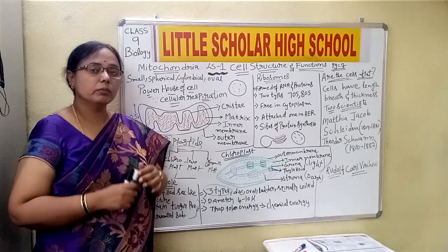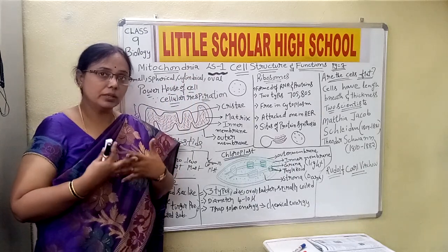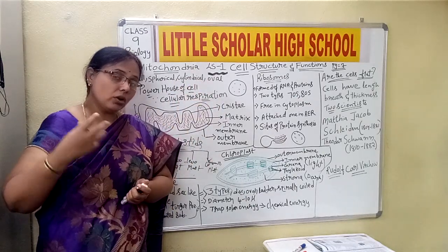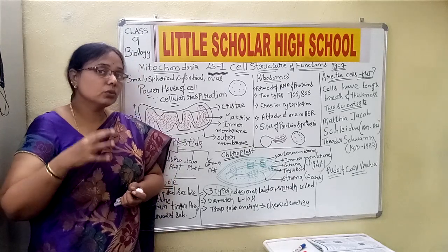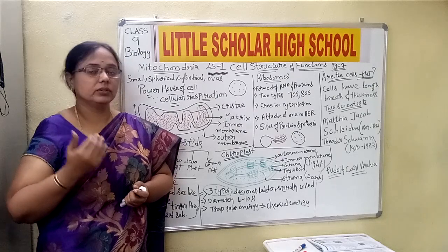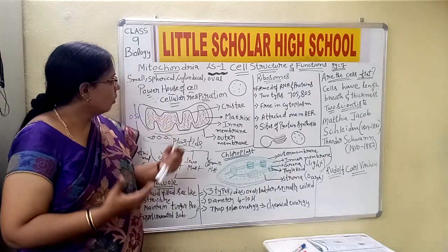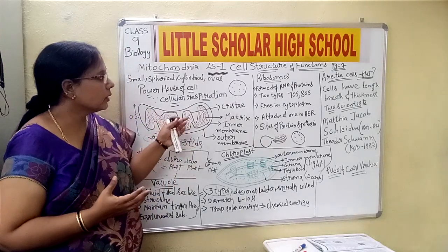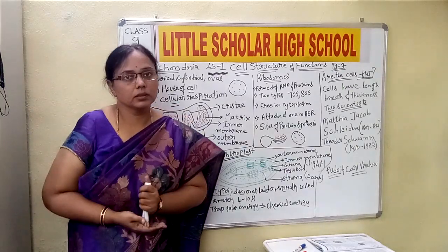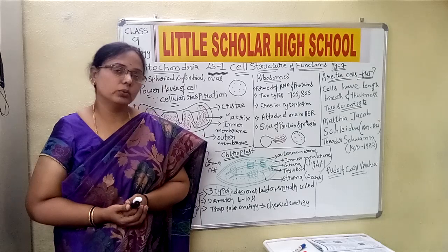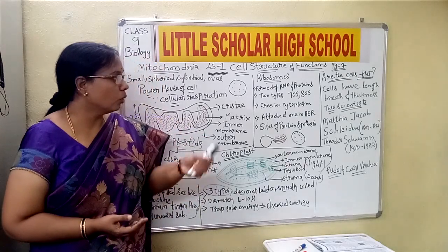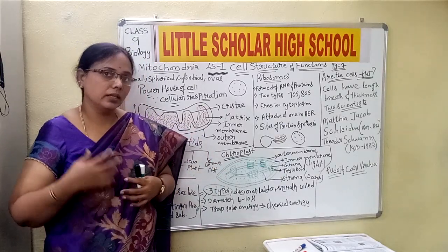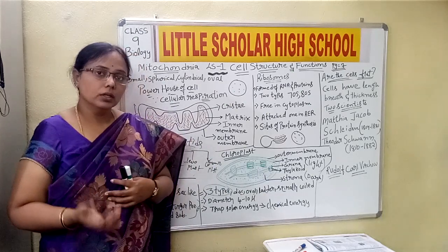This is all related to your first chapter — cell structure and function. We have seen all the cells, their structures, the importance of each organelle, and how each organelle has its own function to play within the cell. The coordination of all the cell organelles makes the organism work perfectly. Please go through all the cell organelles, as this is the basic foundation for future classes.